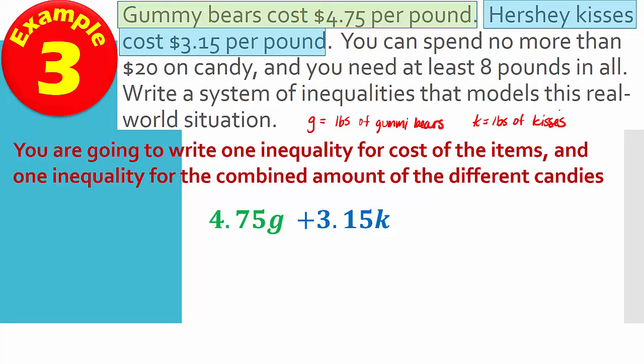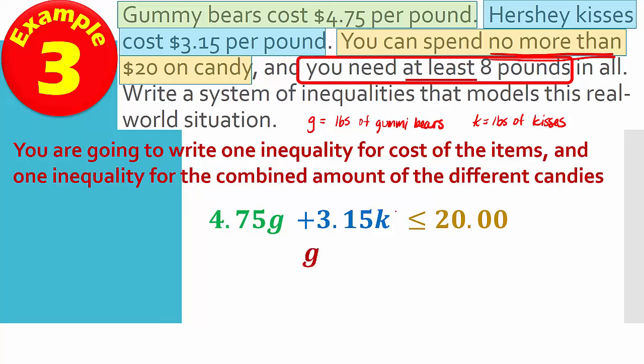And then we can spend no more than. No more than. So here's a tip off that it's an inequality. We've got no more than. It doesn't say you can spend exactly $20, but you can't spend more than $20. All right, so we're going to say that this amount has to be less than the $20 we have. If we had it facing the other way, we'd say we could spend at least $20. But that's not the case. This amount has to be less than or equal to the $20. Now, we need at least eight pounds in all. So this is kind of like the last one where we're just going to add the g and the k. And again, we need at least. So this amount has to be greater than eight because it's at least.